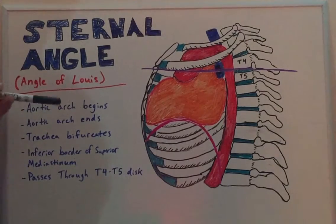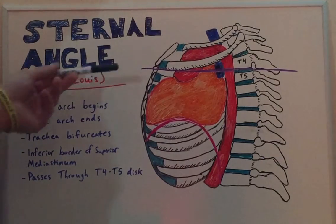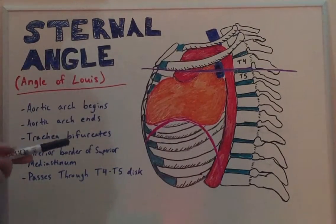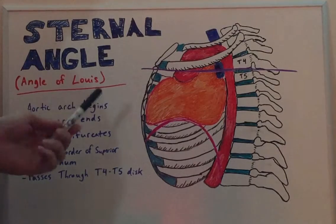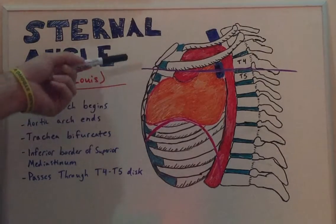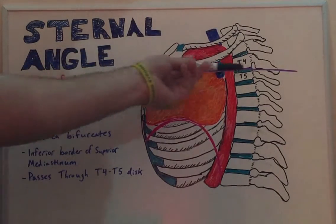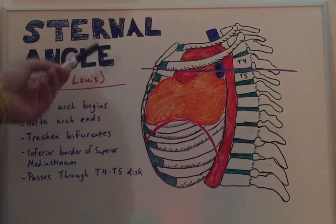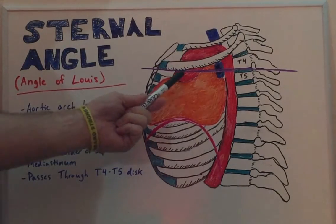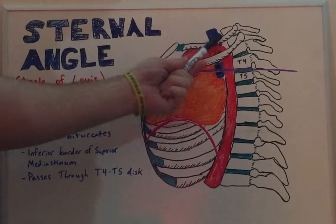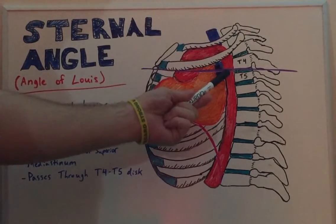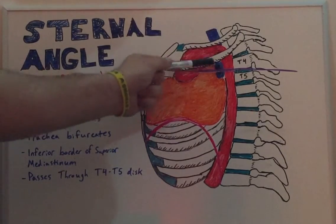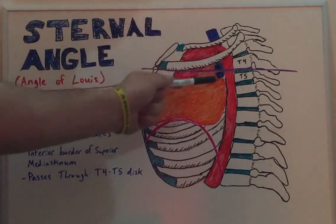As we can see from the angle of Louis, which typically runs at about 160 degrees, it has a bunch of structures which run through this angle. Here we have the beginning and the end of the aortic arch, the bifurcation of our trachea, shown here in blue.